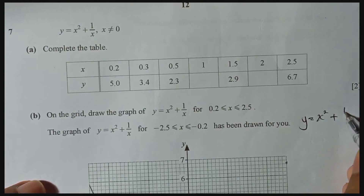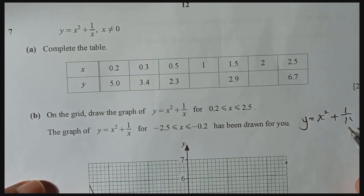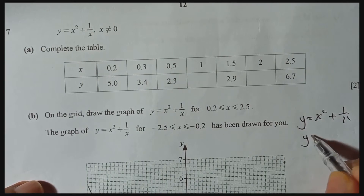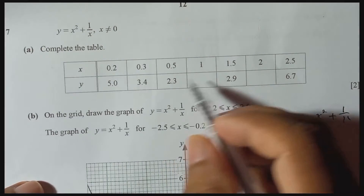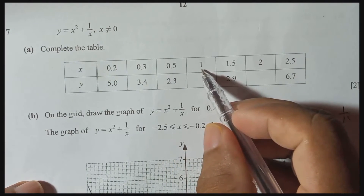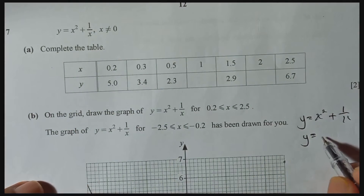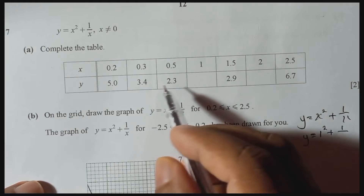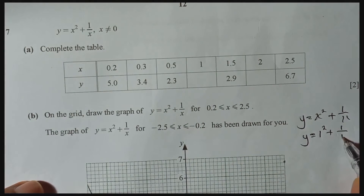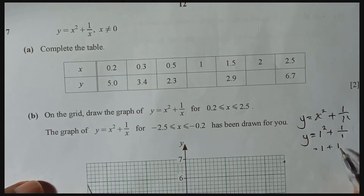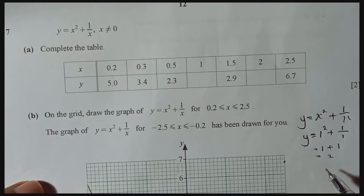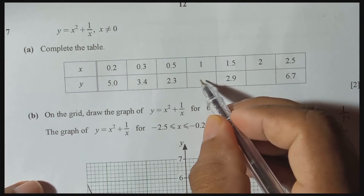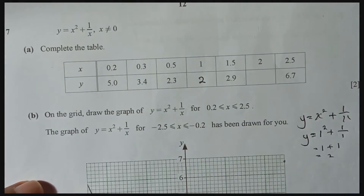For the x you need to write one — one squared plus one over x, replace x with one again. So one squared means one, and one over one means one again, so that's why here the answer is two. Very simple idea — so here must be two.